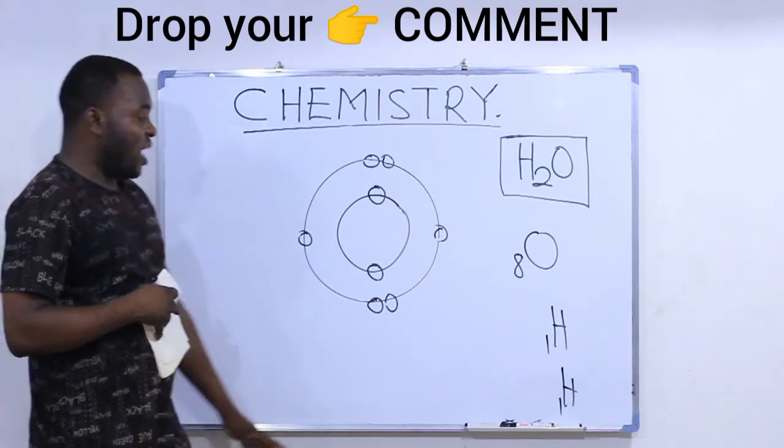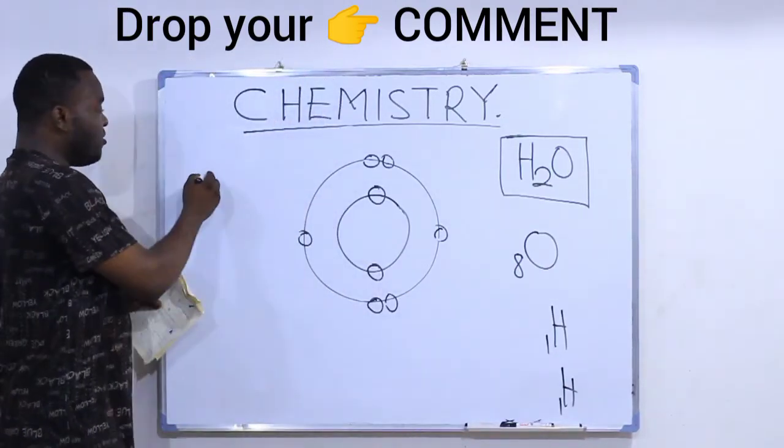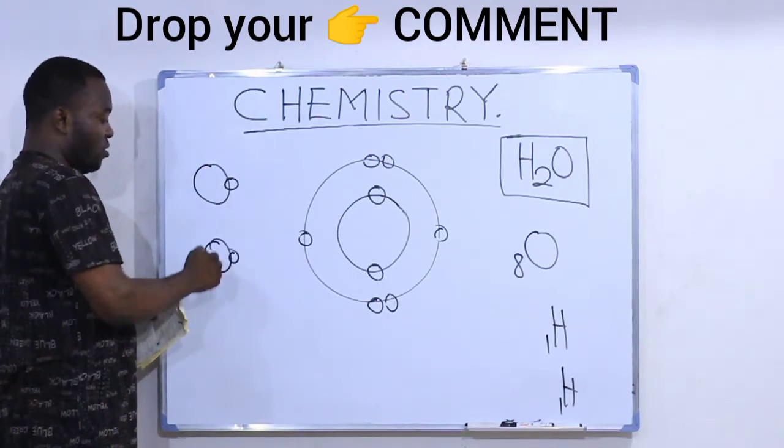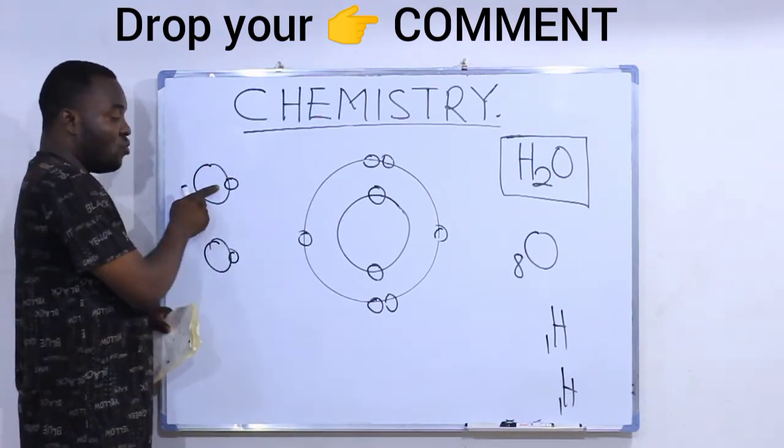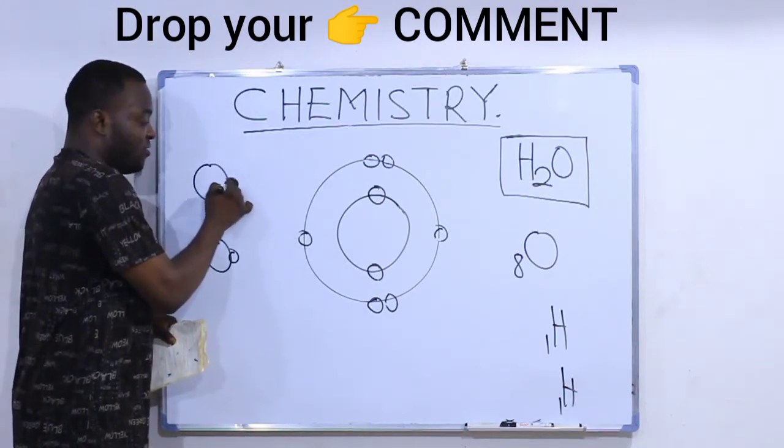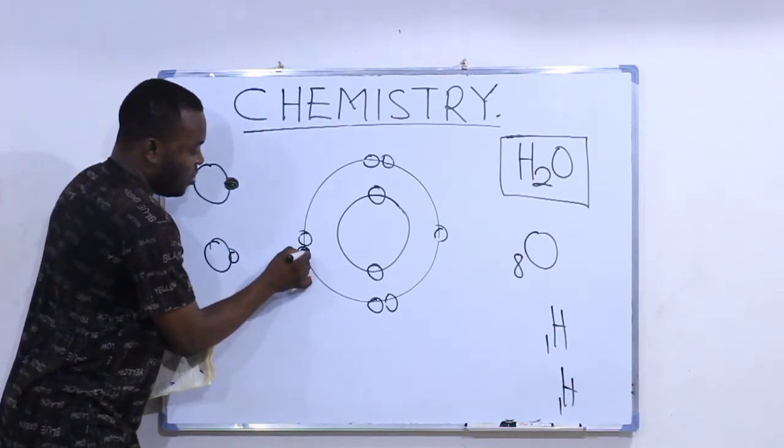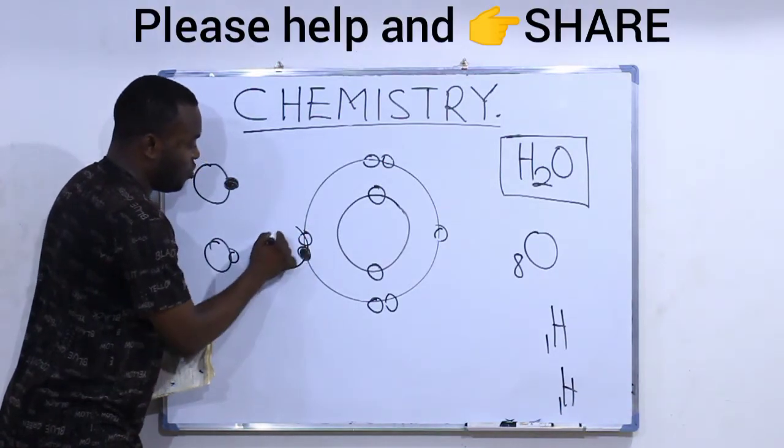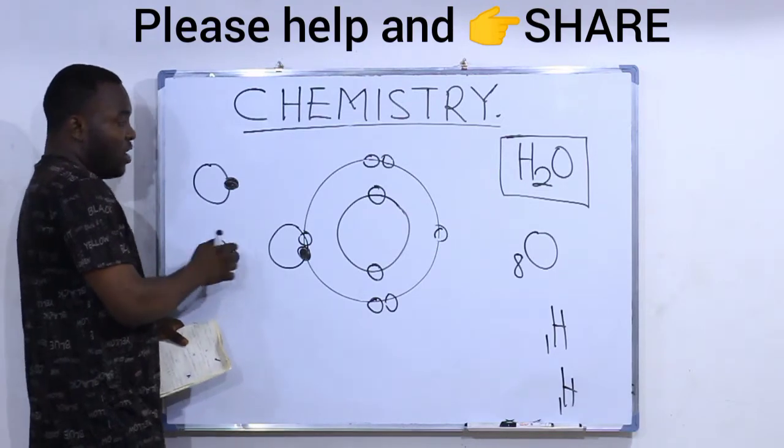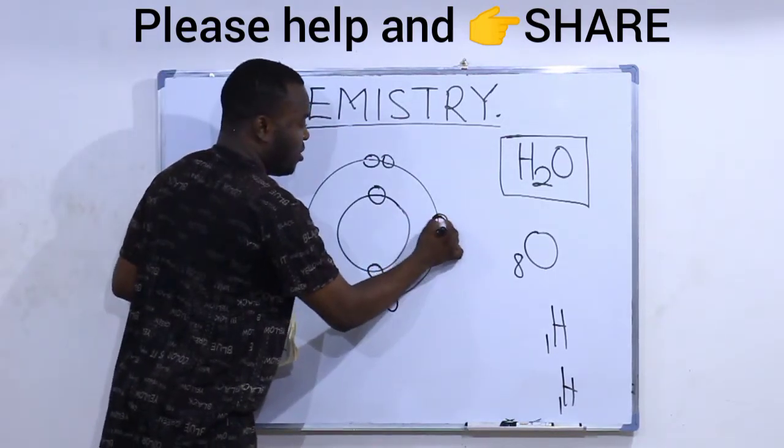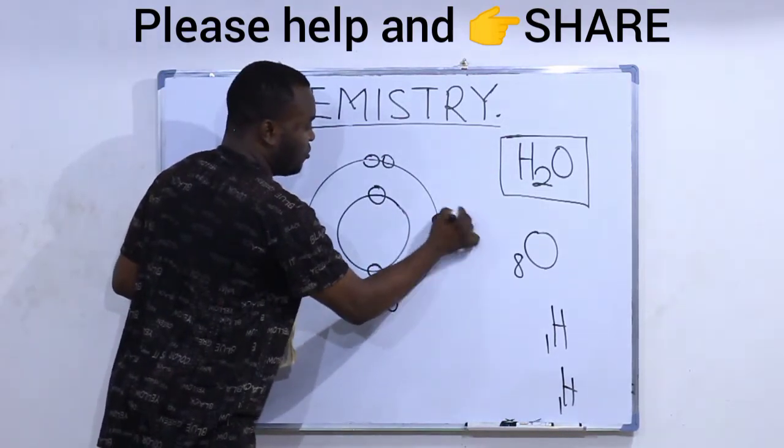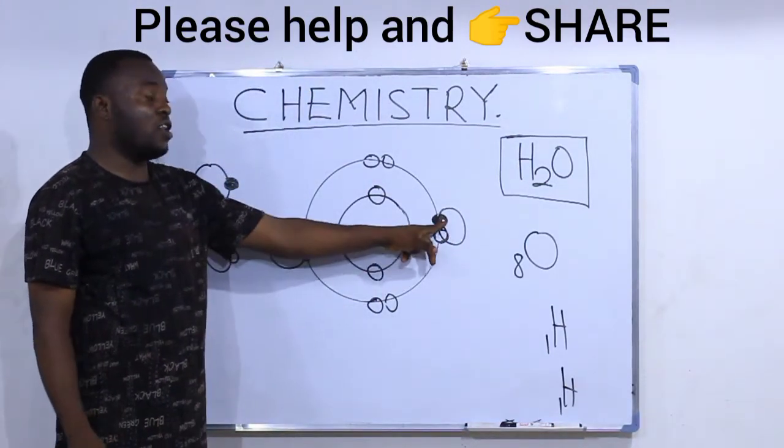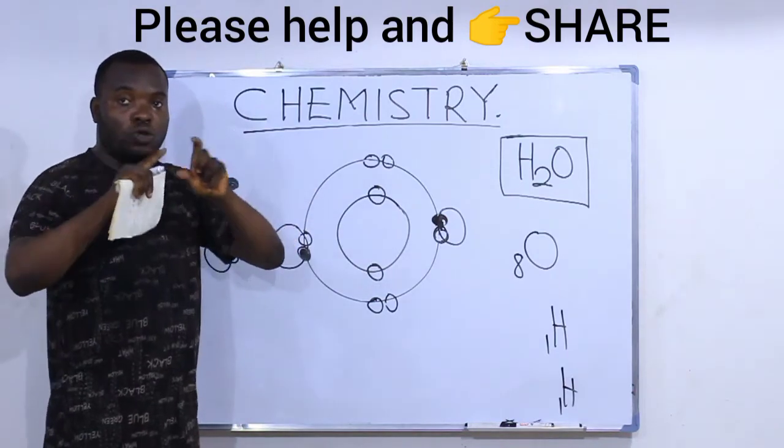Now it's time to attach the hydrogens. Each hydrogen atom has one electron. The first hydrogen comes here - the black dot represents the electron of the hydrogen. Hydrogen brings its electron here and shares it with one of oxygen's electrons. Hydrogen will share with oxygen, oxygen will also share with hydrogen.